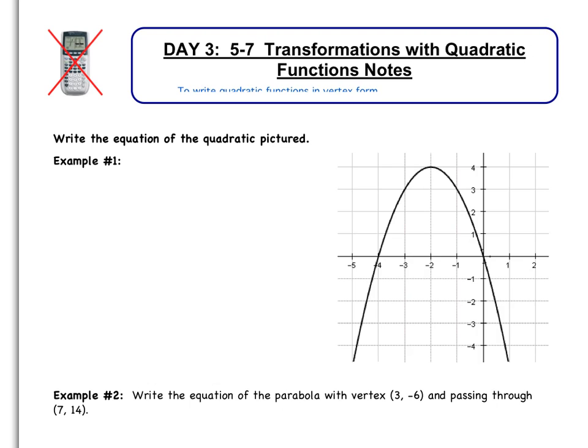So let's just jump right into example number one. It says write the equation of the quadratic pictured. So first we're going to start with basic vertex form, which is y equals a(x minus h) squared add k. And remember from before that (h, k) is the vertex. So the first thing that I need to do is find the vertex. The vertex is the highest or lowest point on the graph. In our case, this is our vertex right here,